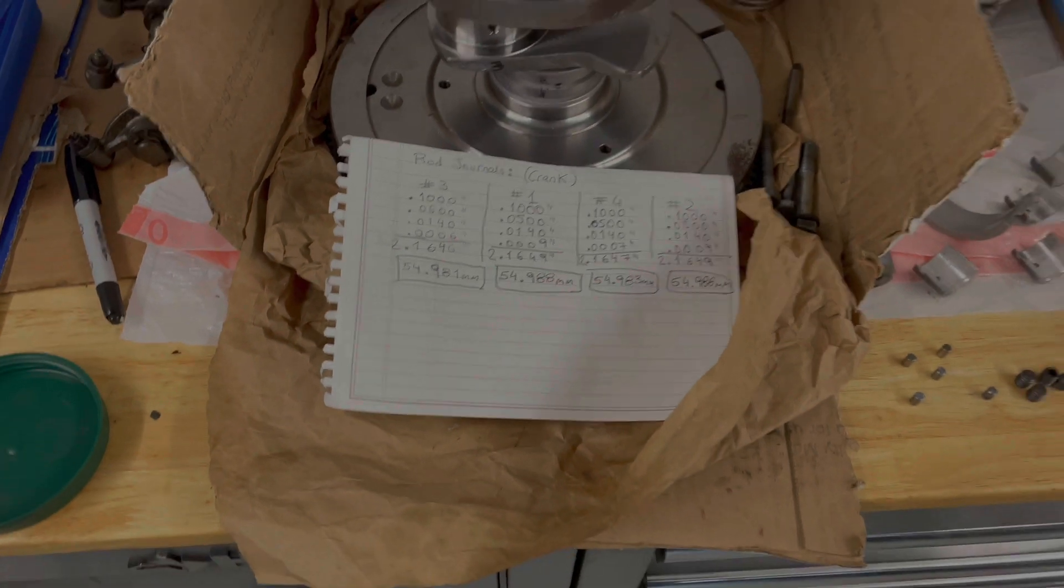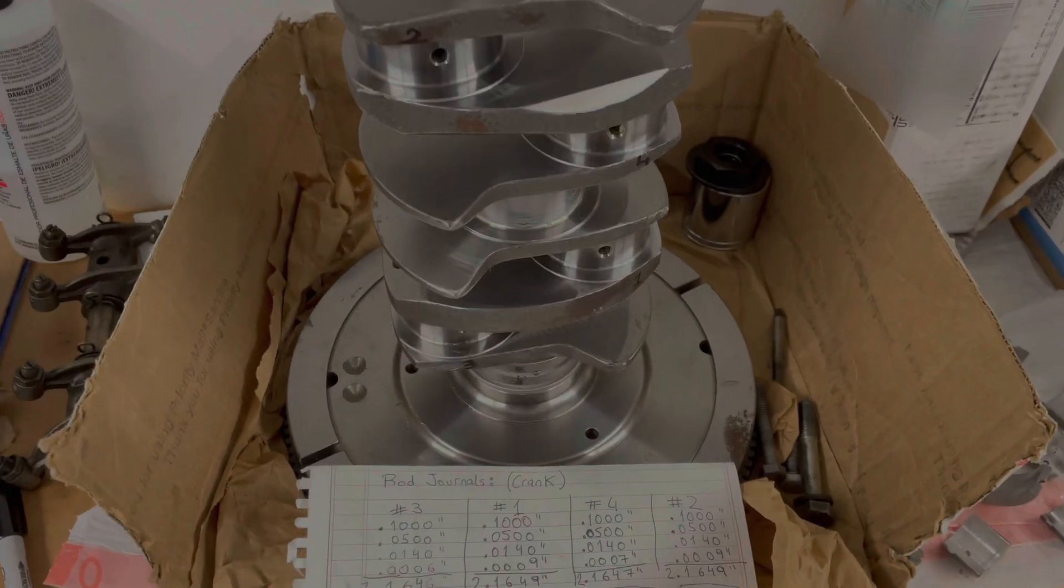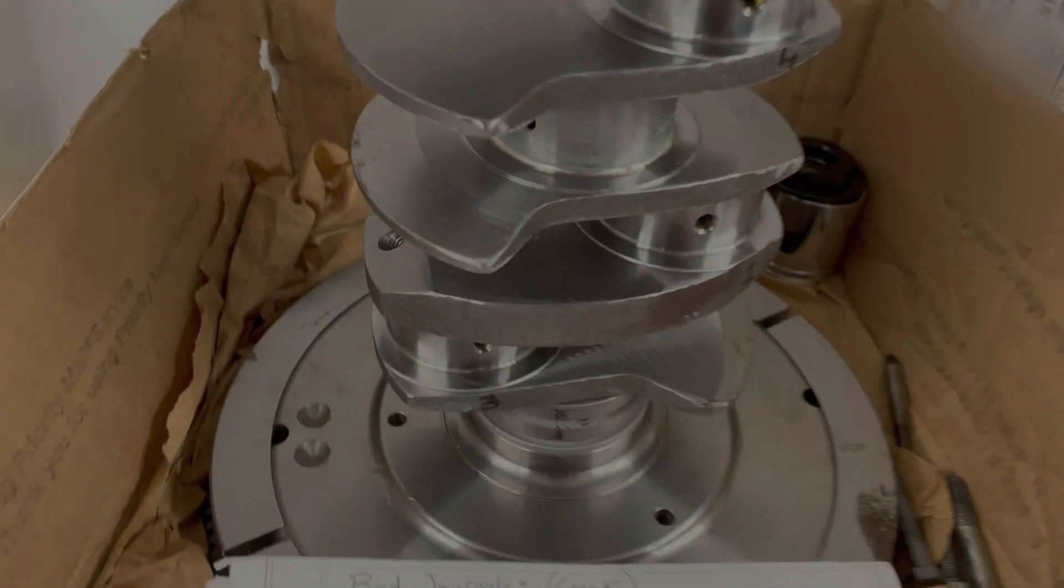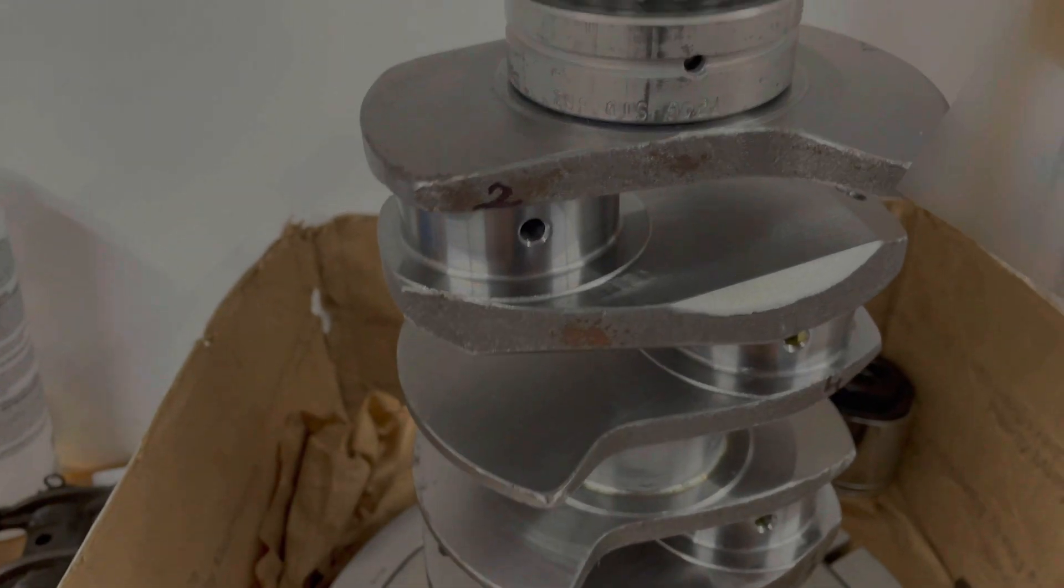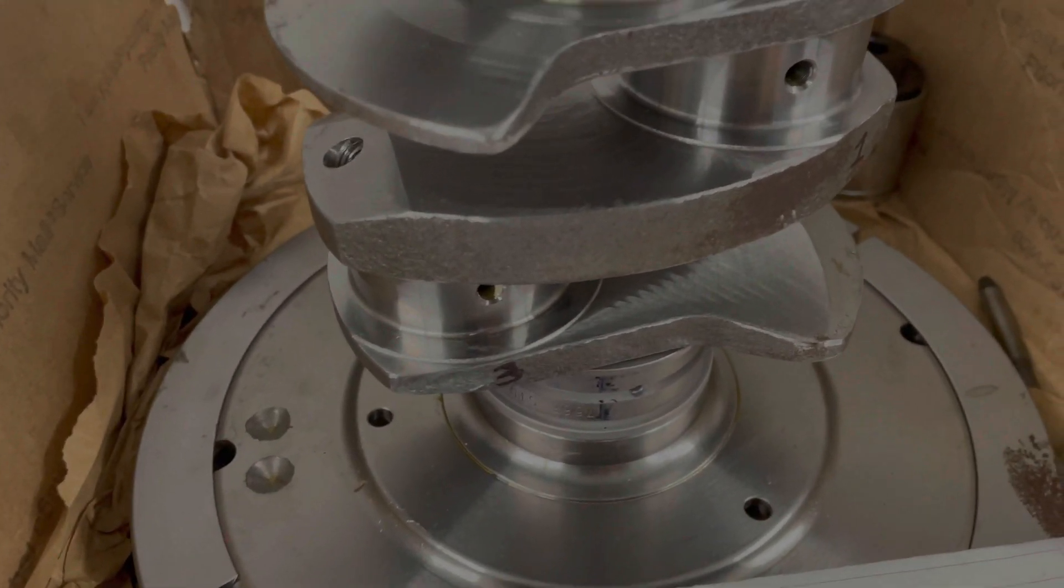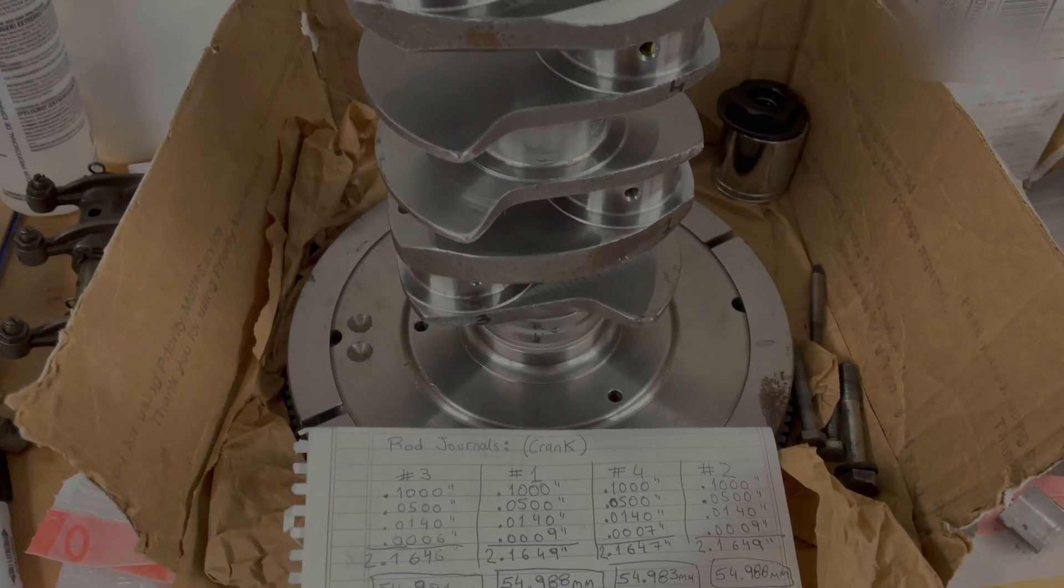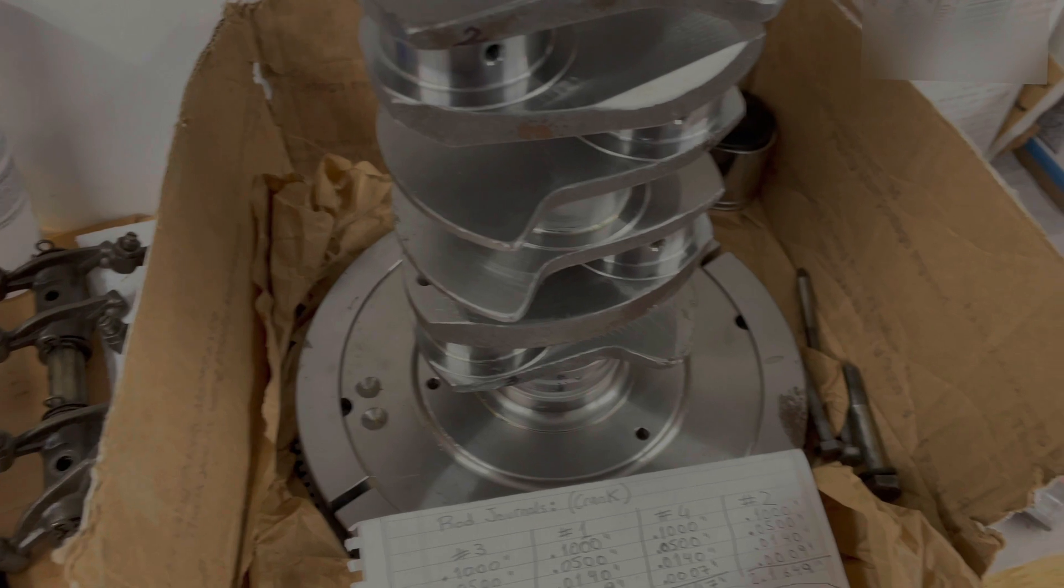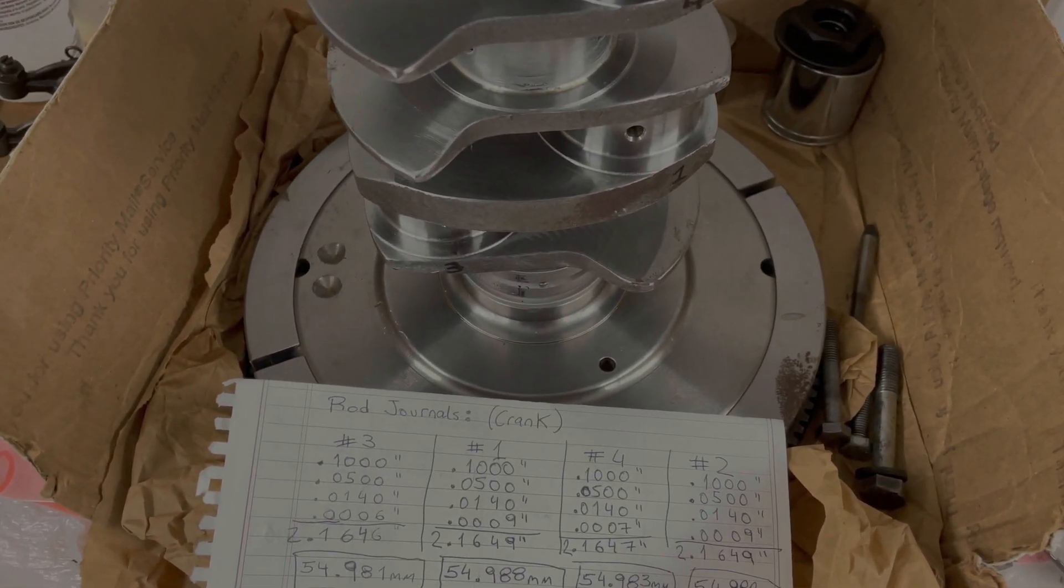I'm going to talk about rod bearing clearances. Yesterday I had to take them all out from their journals that I had already put Loctite on because I wanted to measure everything properly. I tried using plastic gauge; a lot of people recommend it, even the book recommends it, but it didn't work for me.